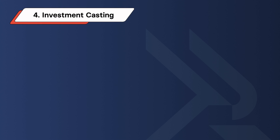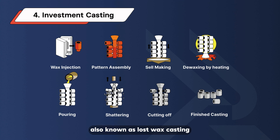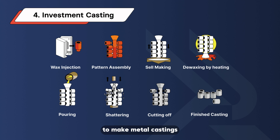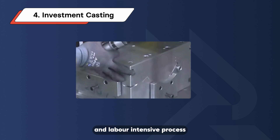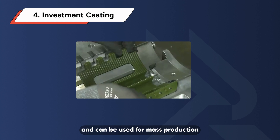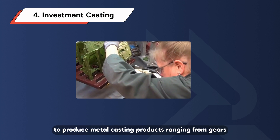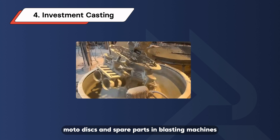Investment Casting. Investment casting, also known as lost wax casting, is a process that invests a wax pattern with refractory material and a binding agent to shape a disposable ceramic mold, and then molten metal is poured into the mold to make metal castings. Investment casting is an expensive and labor-intensive process and can be used for mass production or in complex castings to produce metal casting products ranging from gears, bicycle trunks, moto discs, and spare parts in blasting machines.